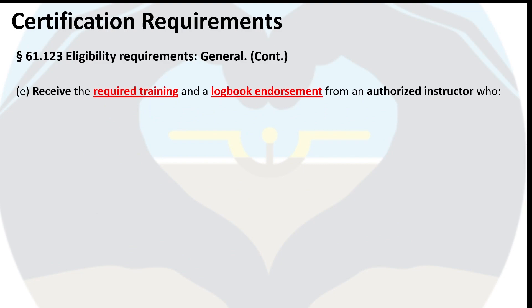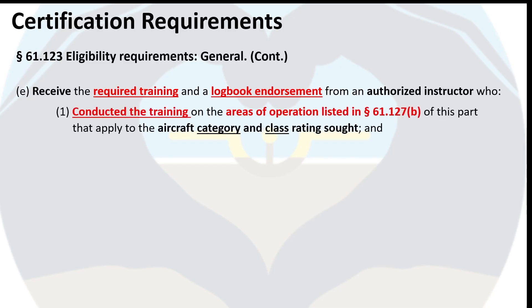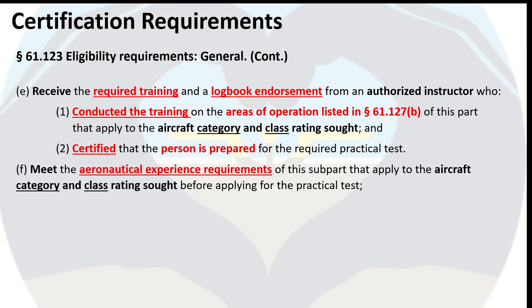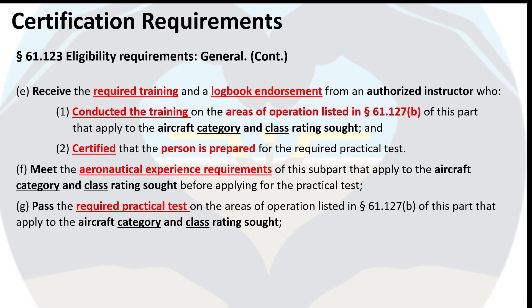Next, you must receive the required training and a logbook endorsement from an authorized instructor who conducted the training on the areas of operation listed in FAR 61.125 that apply to the aircraft category and class rating sought, and certified that the person is prepared for the required practical test. You must also meet the aeronautical experience requirements of this subpart that apply to the aircraft category and class rating sought before applying for the practical test. Then you must pass the required practical test on the areas of operation listed in FAR 61.125.